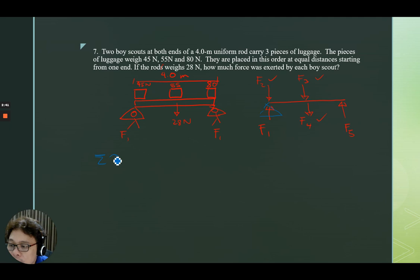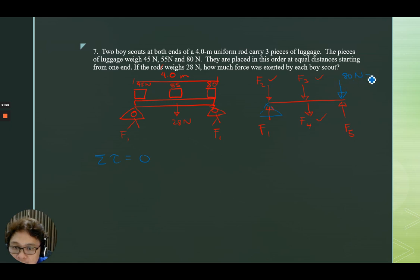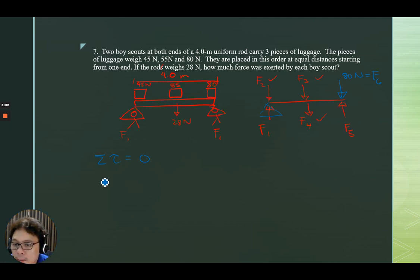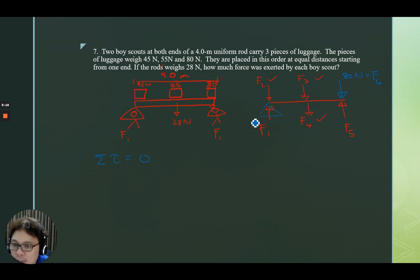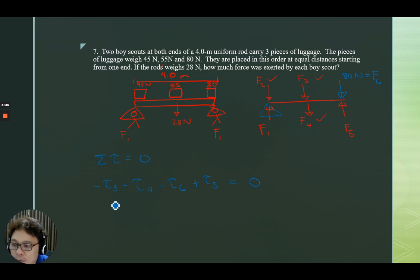We set the equation for torque: summation of torque is equal to zero. Torque 3 will produce clockwise motion, torque 4 will produce clockwise motion, torque 6 will produce clockwise motion, and torque 5 will produce counterclockwise motion. From this equation, we will be able to solve F5 — that is the unknown.